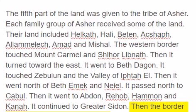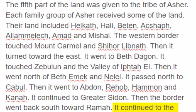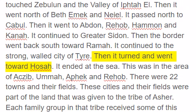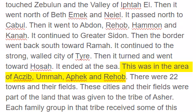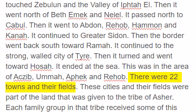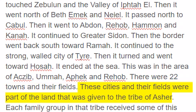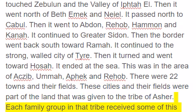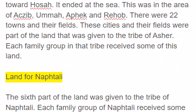Then the border went back south toward Ramah. It continued to the strong, walled city of Tyre. Then it turned and went toward Hosat. It ended at the sea. This was in the area of Axab, Ummah, Afeq, and Riob. There were twenty-two towns and their fields. These cities and their fields were part of the land that was given to the tribe of Asher. Each family group in that tribe received some of this land.